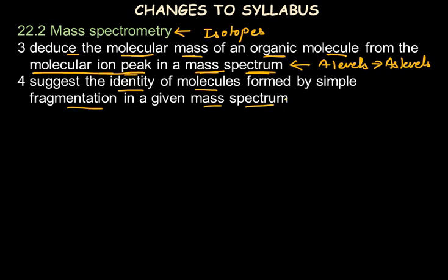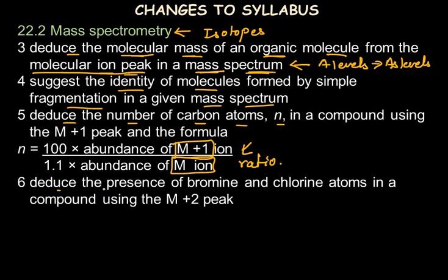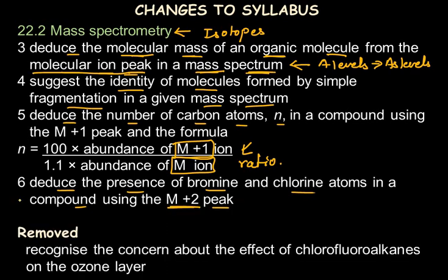This fragmentation topic is also a shift from A-level to AS-level. Another subtopic in mass spectrometry requires deducing the number of carbon atoms n in a compound using the given formula, where the M+1 and M peak ratios will be provided. From this ratio of abundance of M+1 and M ion peaks, students can calculate the number of carbon atoms in a molecule. There is also a subtopic to deduce the presence of bromine and chlorine atoms using M+2 and M peaks. All these were shifted from A-level to AS-level.